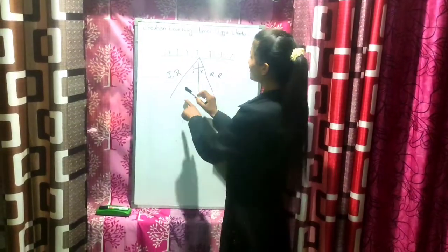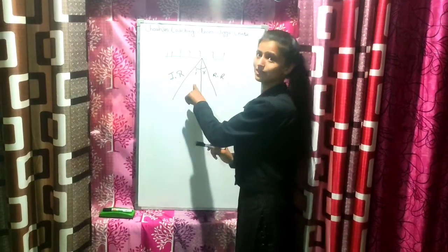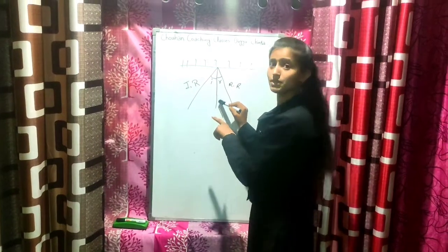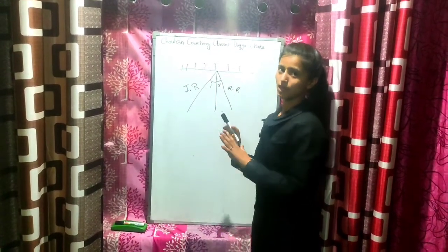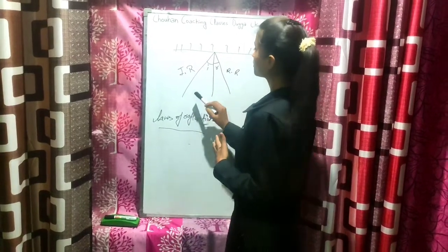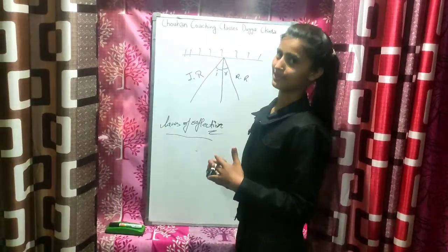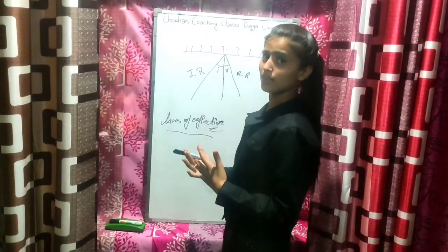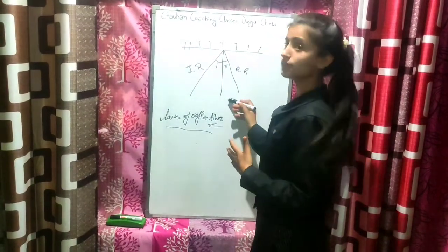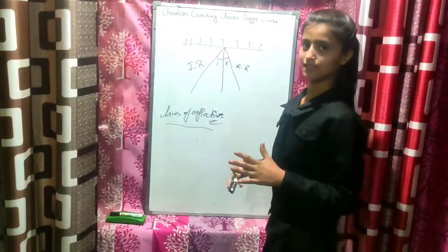The incident ray and the normal ray form the angle of incidence. According to the first law of reflection, the incident ray, the reflected ray, and the normal all lie on the same plane. In the second law of reflection, the angle of incidence and the angle of reflection are equal. That's all. Thank you.